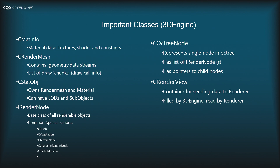The octree nodes are represented by the COctreeNode class. Each node represents a single node in our octree, has eight child node pointers, and owns a list of render nodes. Each object can only be present in one octree node — we don't restrict data to leaf nodes, objects can also live in intermediate nodes. This constraint allows some optimizations in the engine.